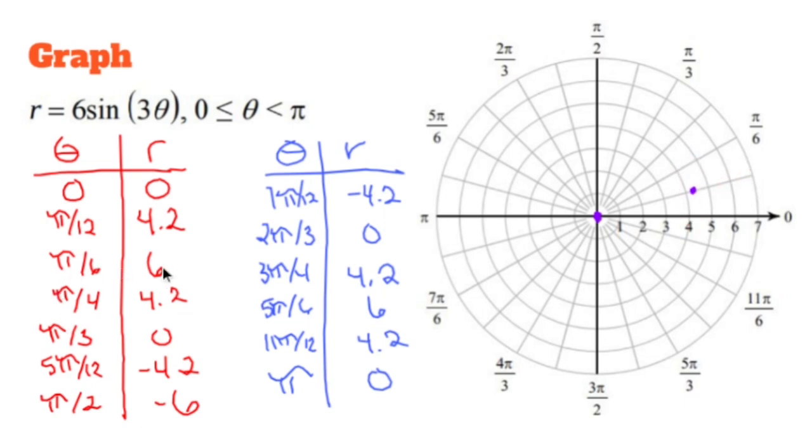Pi over 6, 6 is going to be that guy right there. The next one up, pi over 4, is going to be 4.2. What's next?